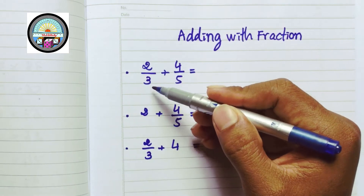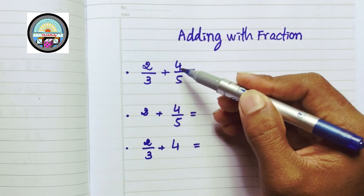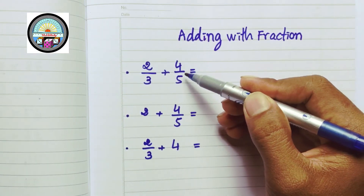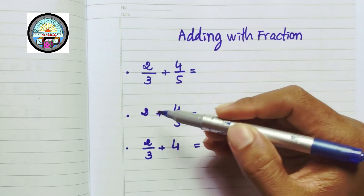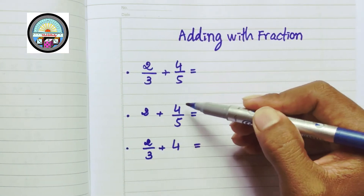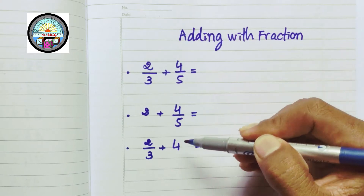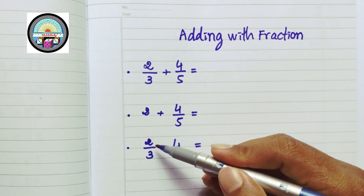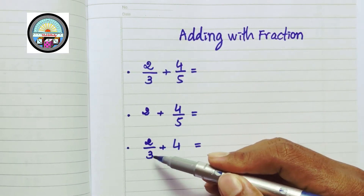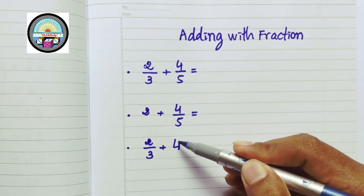2 over 3 plus 4 over 5. 2 plus 4 over 5. 2 over 3 plus 4.